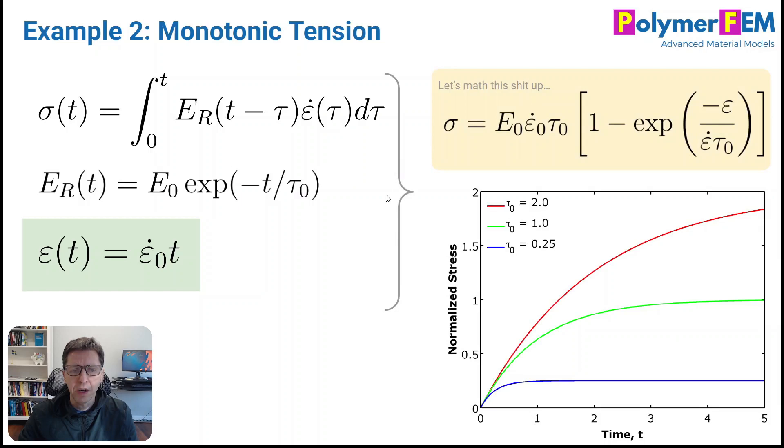I can then plug this into our master equation and do a little bit of math. It's very simple. Half a page on a piece of paper and you can end up with this equation. This is how the stress depends on the applied strain for a linear viscoelastic material model with this type of relaxation function. And if you look at this equation a little bit, I plotted it at the bottom, you can see that as the strain goes to infinity, this thing goes away and you get a steady state stress. Here it is, given by this number. Pretty weird.